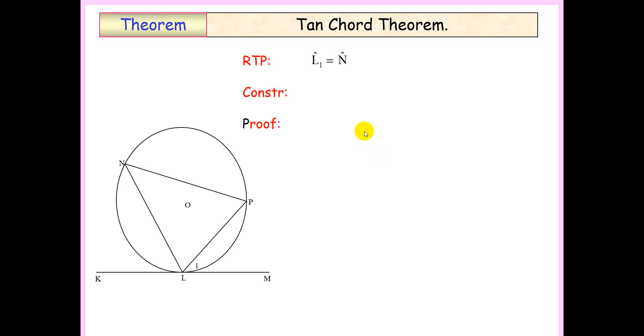In this video we're going to be looking at proving the famous Tan Chord Theorem, which states that the angle between the tangent and the chord is equal to the angle in the alternate segment subtended by the chord. In this case we want to prove that angle L1, which is the angle between the tangent and the chord, is equal to the angle at the circumference which is N, subtended by chord LP.